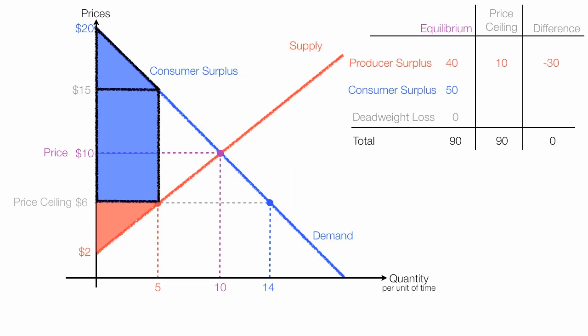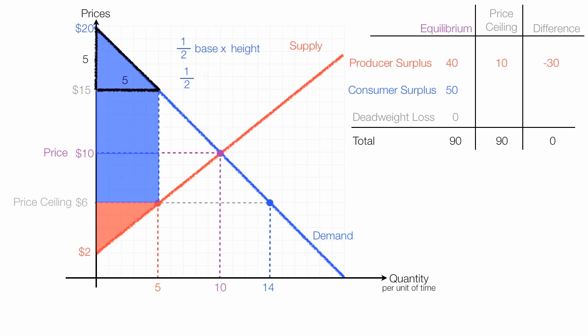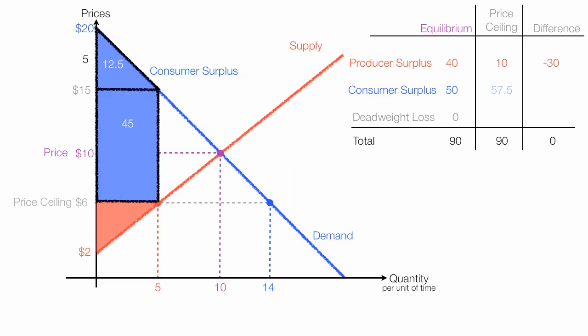So to calculate the new consumer surplus, I take the area of the triangle plus the area of that rectangle. Area of this rectangle, that one right here, is one side is 9, and the other side of that rectangle is 5. So the area is 45. The area of that triangle is 1/2 base times height. The height of the triangle is 5, or 20 minus 15. The base is 5, or this distance right here. The area is 1/2 base times height, or 1/2 times 5 times 5, which is equal to 12.5. Now, I add the area of the triangle and the rectangle together, 12.5 plus 45. And this equals 57.5. And that's consumer surplus after the price ceiling. And consumer surplus has gone up 7.5.